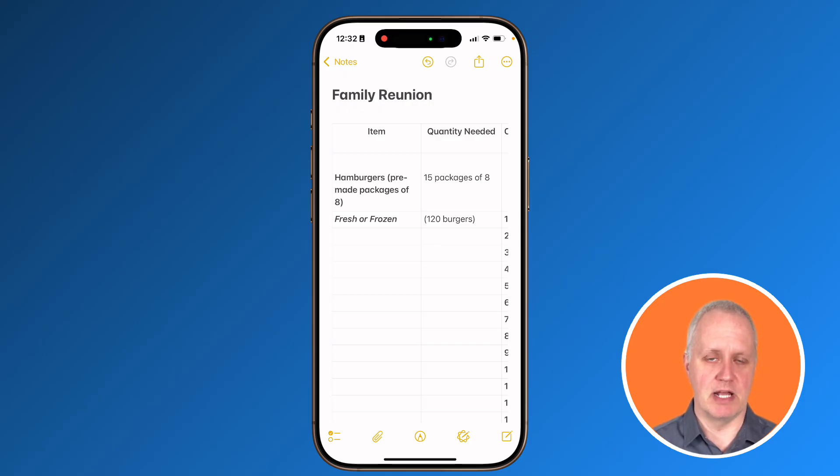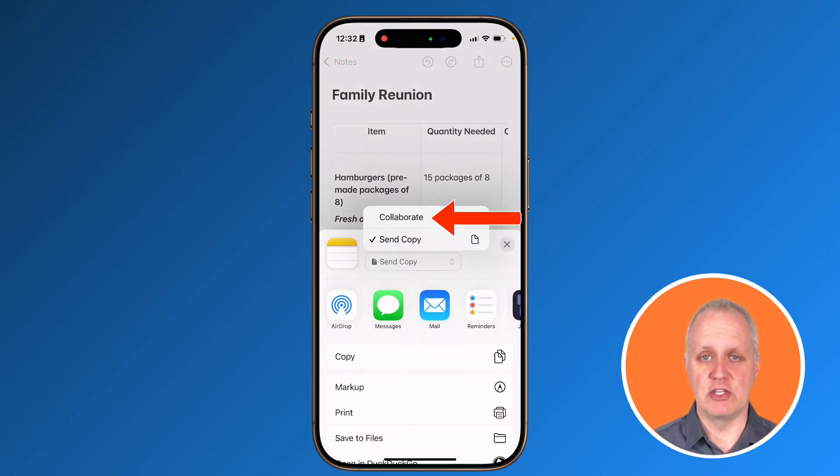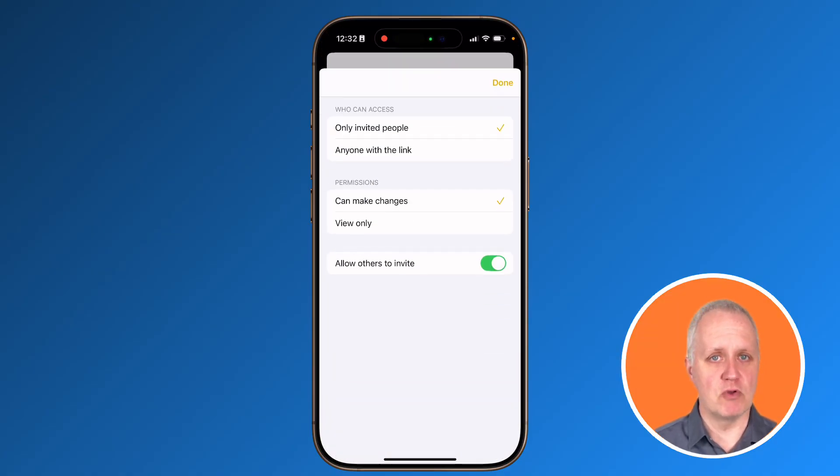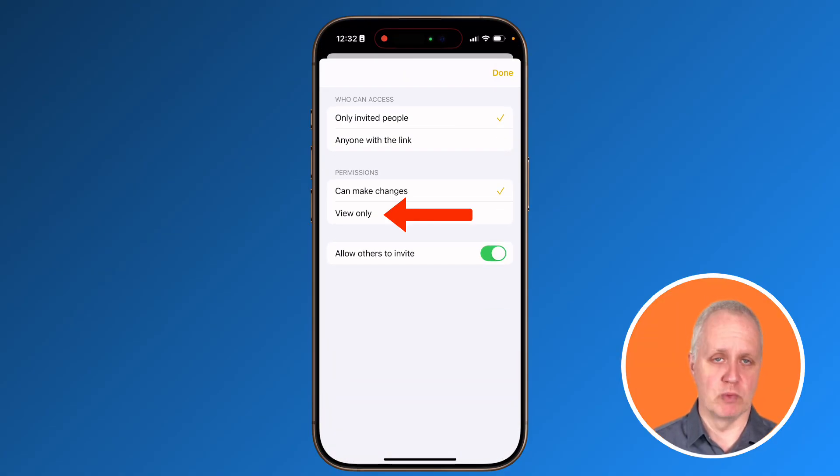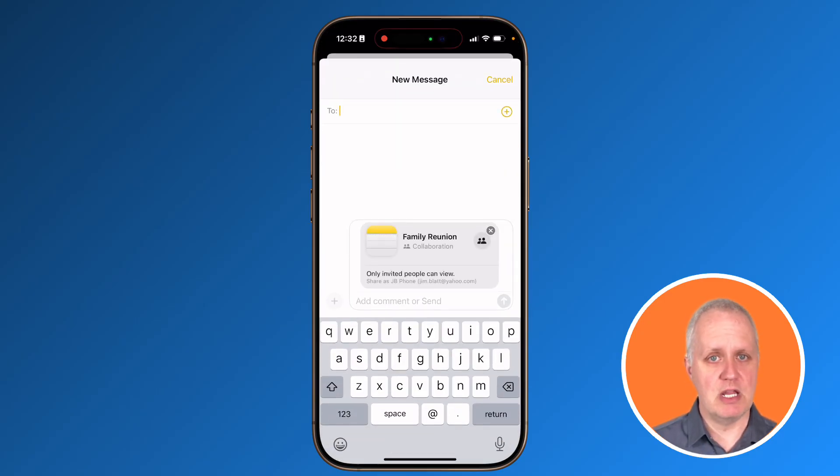And here's how to share and collaborate on a note. Open the note you want to share. Tap the share button. Make sure to choose collaborate in the share menu, not share a copy. Then set the permission level. People can make changes for full collaboration or view-only for read-only access. Then choose how to send the invitation. For instance, you can send it in messages or email. Then send the invitation and your collaborators can start contributing immediately.